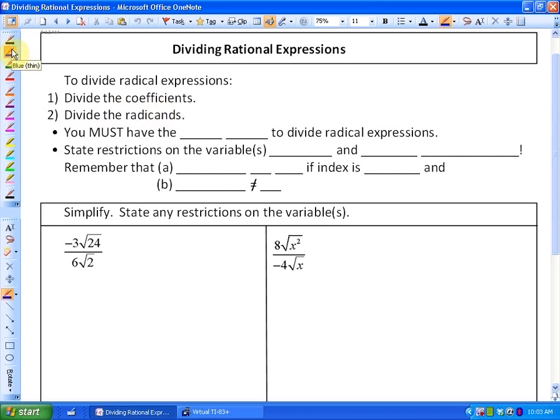One important rule is that you must have the same index in order to divide radical expressions. For example, if I wanted to divide the cubed root of x squared by the square root of x, that is not allowed because the indexes are different. So that would already be in simplest form. In the two cases we have today, they have the same indexes, so we can divide them.